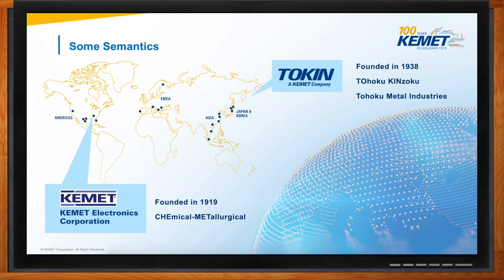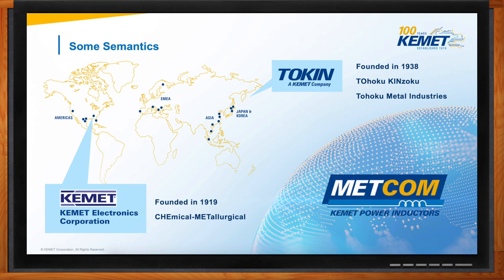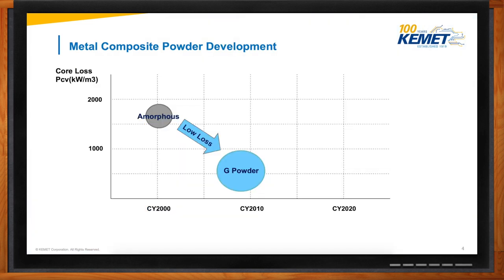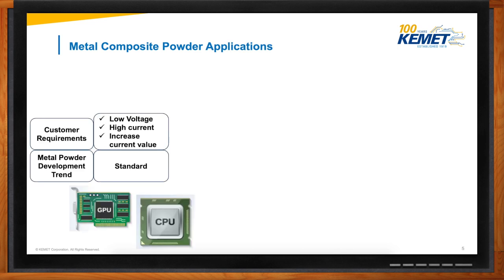Recently you may have seen some noise about our METCOM inductors. METCOM is a metal composite powder that we created with a very good characteristic of low loss. It was developed to move away from amorphous materials. At that time, customers wanted a good material for low voltage, high current — they wanted to increase their current value. So we created this for those older types of applications. That doesn't really look like new technology. That's correct, but it was the starting point.